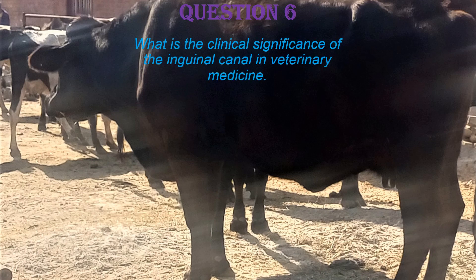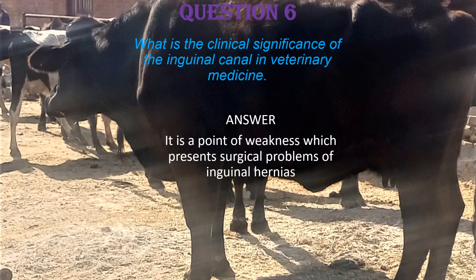Question six: what is the clinical significance of the inguinal canal in veterinary medicine? It is a point of weakness presenting surgical problems of inguinal hernias, and it is where the condition of cryptorchidism occurs. An inguinal hernia is a bulging of abdominal contents through a weak area in the lower abdominal wall and can occur at either of the two inguinal canals — left or right.